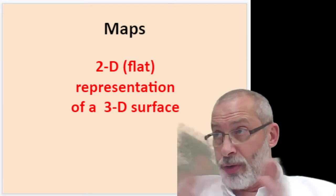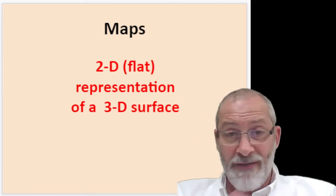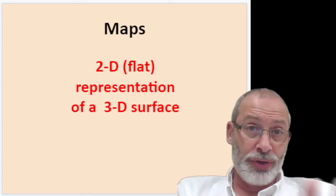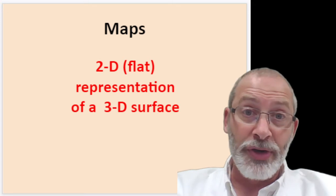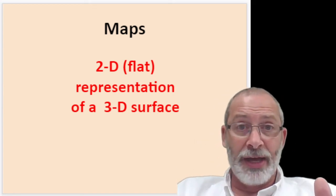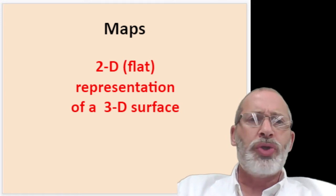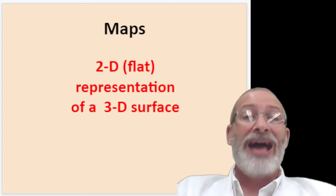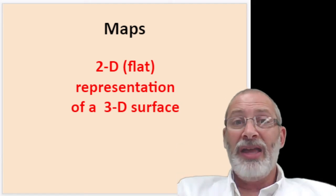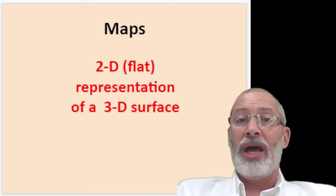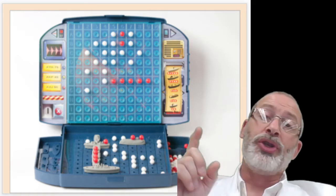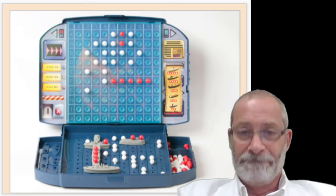If you look out the window, you can see hills and valleys — we have a varied topography right around our school. But if you were to draw a map of this area on a flat piece of paper, how would you draw the hills and the valleys? There are some guidelines we're going to be learning about that will help us along.